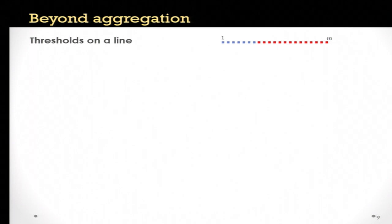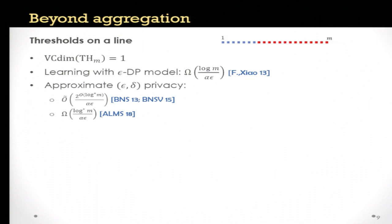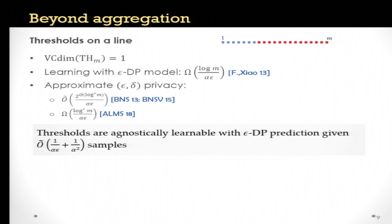To ask whether something better is possible beyond aggregation, we look at the problem of thresholds on a line — the standard class of functions that labels positive all points larger than some threshold, discretized to M labels. The VC dimension is one, but learning with differential privacy requires a number of samples that scales with log M. We show that in this setting one can learn with optimal sample complexity of one over alpha epsilon plus one over alpha squared.